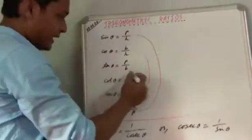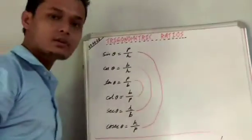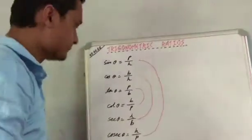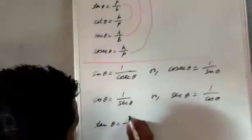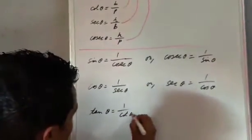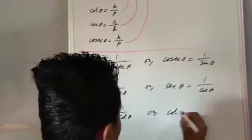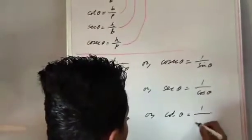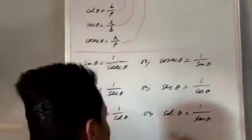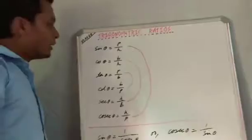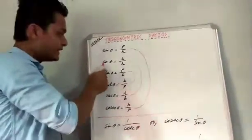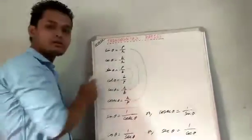Also, tan θ and cot θ are reciprocals of each other. That means tan θ equals 1 by cot θ, or cot θ equals 1 by tan θ. Now let's see what we will get if we divide sin θ by cos θ.